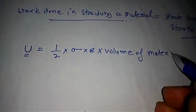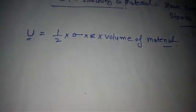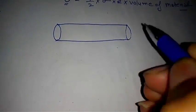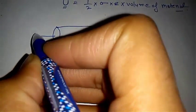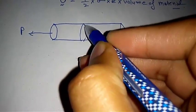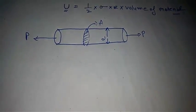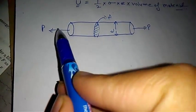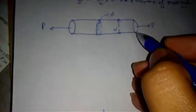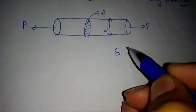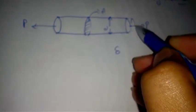So how can we derive this expression? This is really very easy. Let's consider a rod, and I am stretching it with force P. The cross-section area of this rod is A, having diameter D. When you apply the force on the rod, it expands a little bit, and there is an extension Delta in the rod.